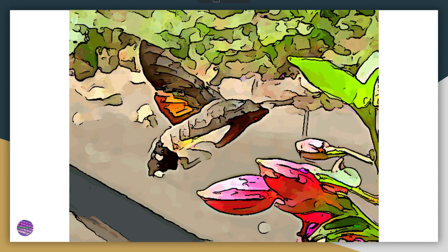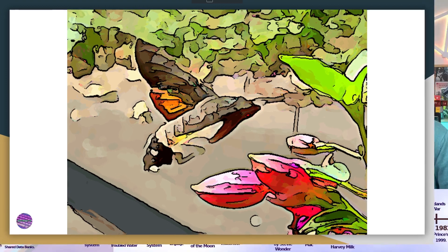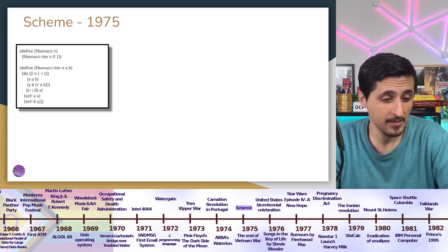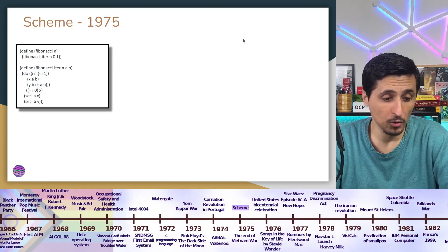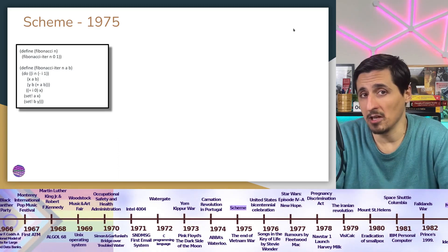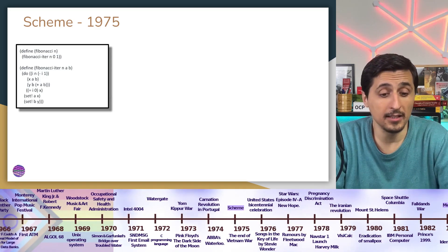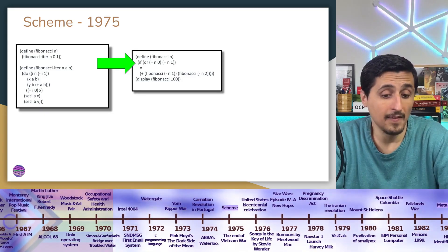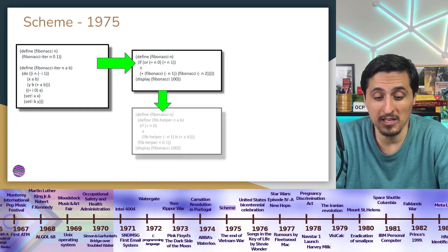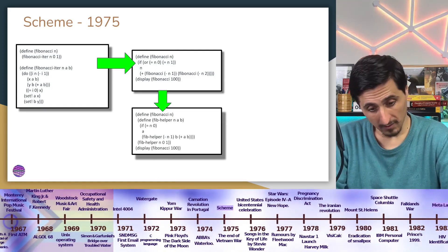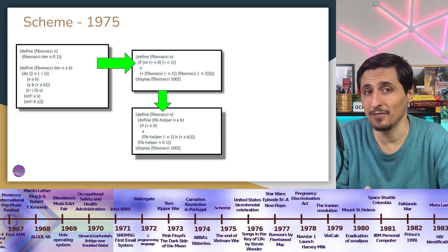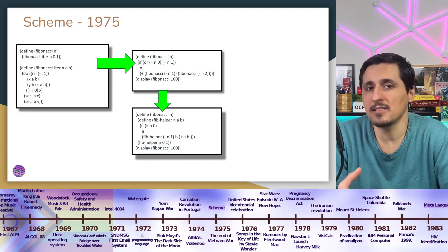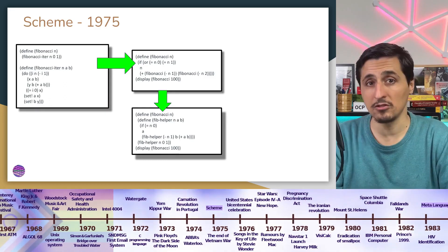The next language is Scheme. Scheme is a language that has been around since 1975. One of the ways of implementing with Scheme is an iterative form where we loop through the index of the Fibonacci sequence. It can also be transformed to the recursive function, which you know already is not very performant. And then it evolves to the tail recursive implementation, where we call the same function over and over again until we get the final result. Scheme introduced tail call optimization, which doesn't necessarily mean the tail recursive function will be converted back to an iterative form.